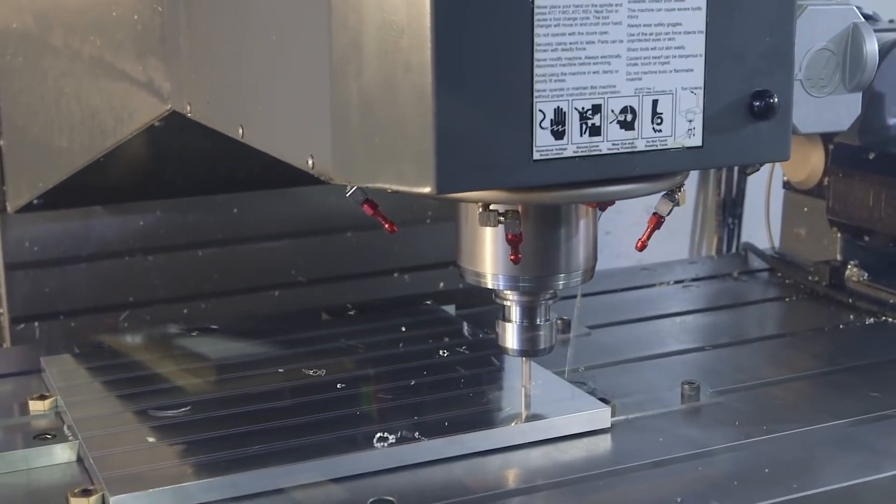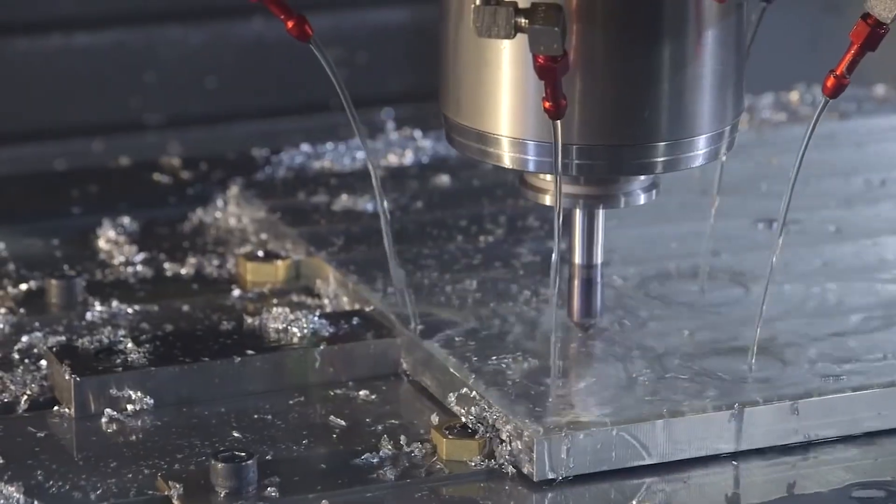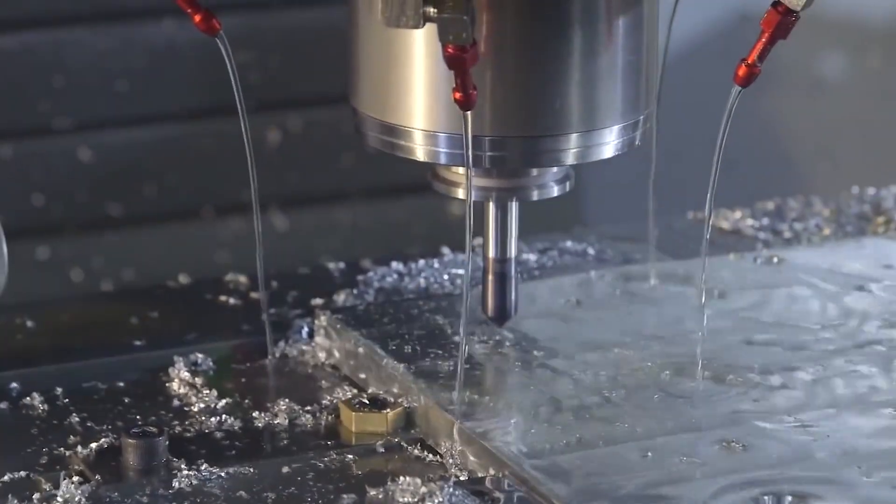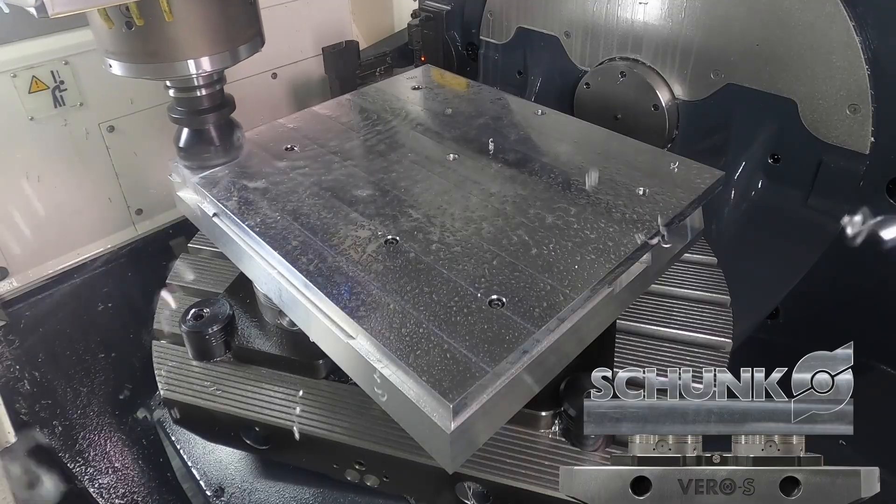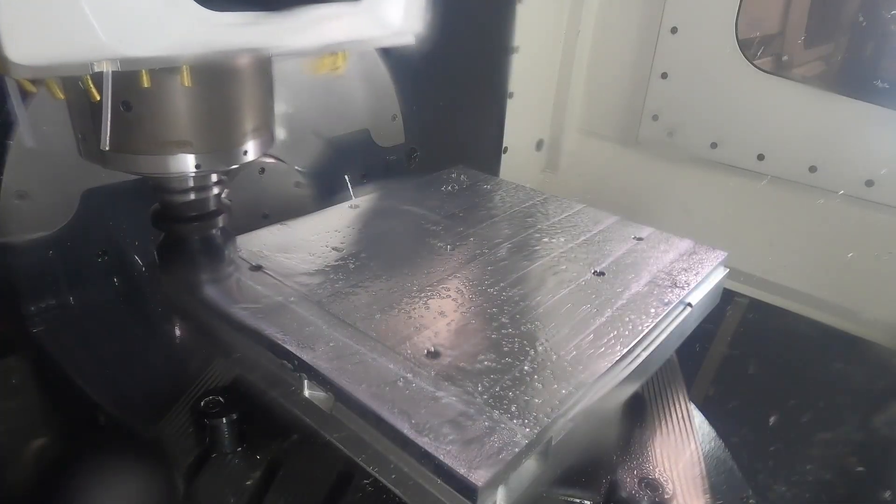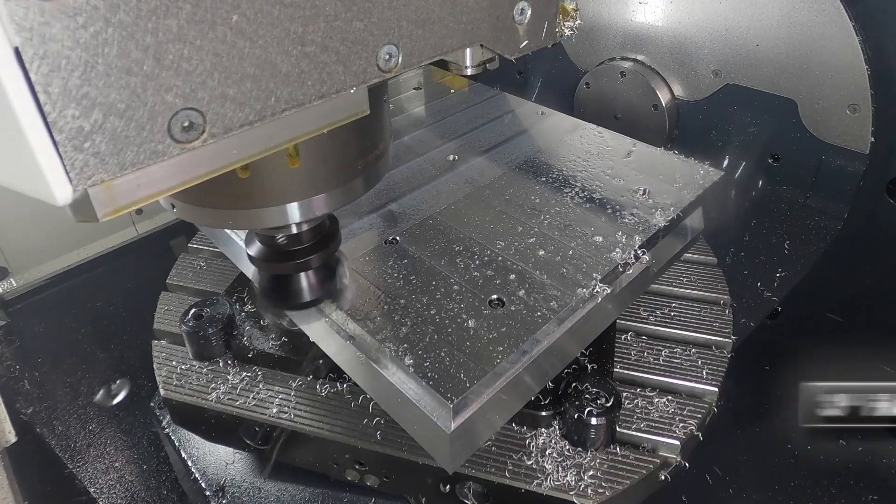We flipped them over. We did the same thing, put the dial indicator. We kissed it. We flip flopped it two more times and we were able to bring it in perfectly within a thou .001.